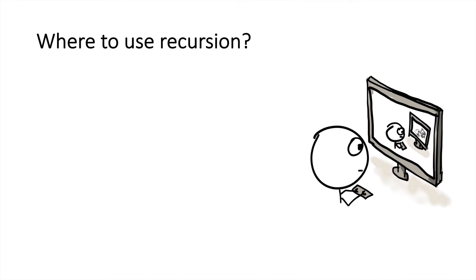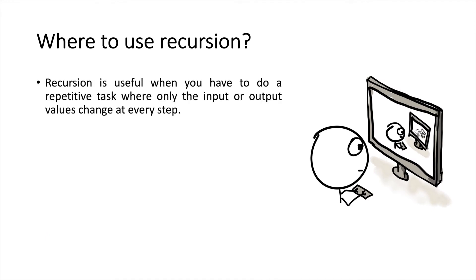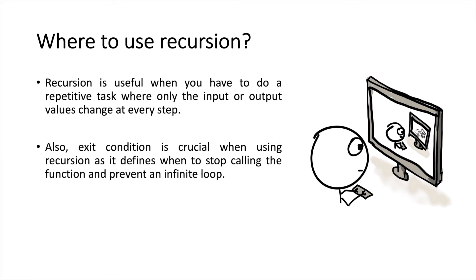So this gives us a basic idea of how a recursive function works where the function calls itself again and again until an exit condition is met. Recursion is useful when you have to do a repetitive task where only the input or the output values change at every step. Also, exit condition is crucial when using recursion as it defines when to stop calling the function and prevent an infinite loop.